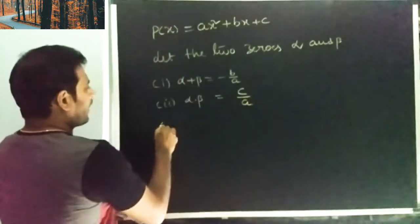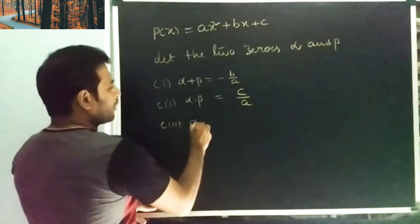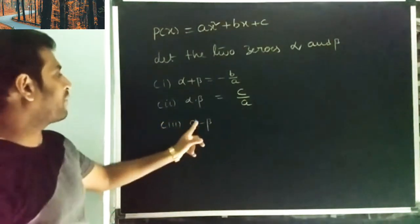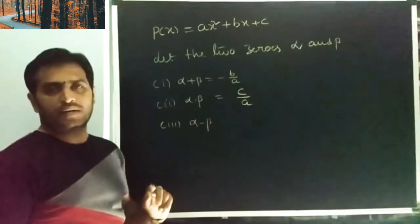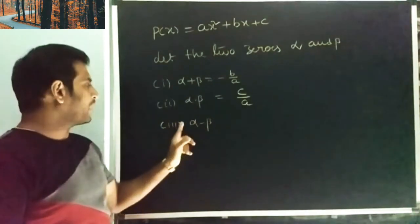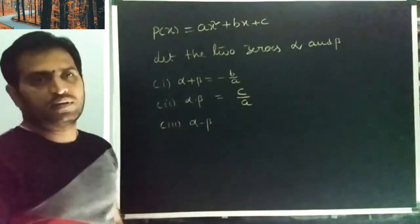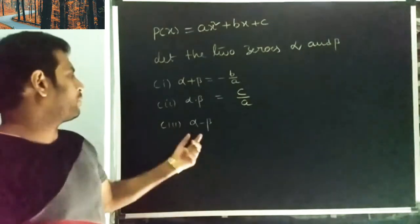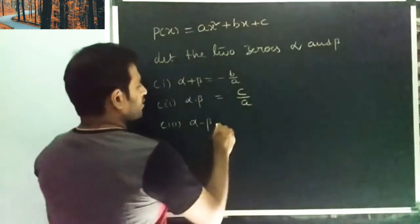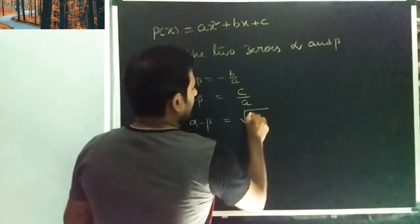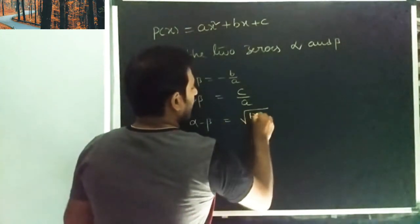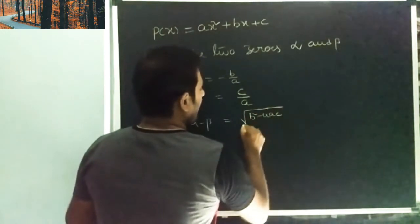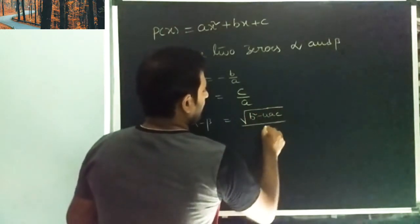Third one, difference of the roots: alpha minus beta — biggest root minus smallest root — is the square root of b square minus 4ac, whole divided by a.